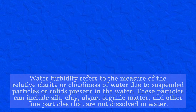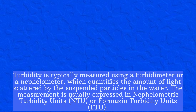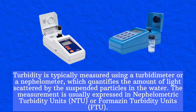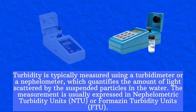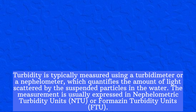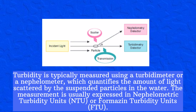Turbidity is typically measured using a turbidimeter or a nephilometer, which quantifies the amount of light scattered by the suspended particles in the water. The measurement is usually expressed in nephelometric turbidity units (NTU) or formazin turbidity units (FTU).